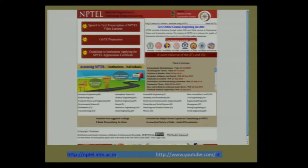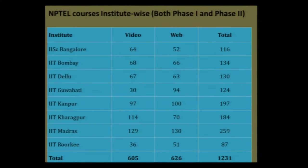This is a screenshot of the NPTEL website. The addresses are NPTEL.iitm.ac.in and YouTube.com. These show the course-wise and institute-wise distribution of courses. IISc Bangalore has 64 video courses and 52 web courses. IIT Kanpur, IIT Kharagpur, and IIT Madras have contributed most to the NPTEL courses. A total of 1,231 courses have been completed as of now.